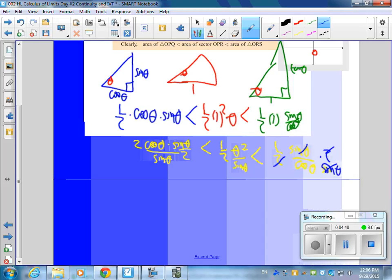Let's see. There should be a 2 here. These will cancel. These will cancel. And those will cancel. And that's going to leave me with cosine theta is less than theta over sine theta is less than 1 over cosine theta.